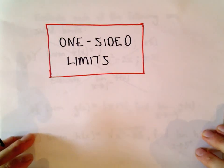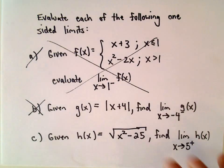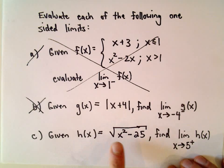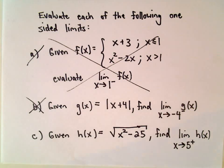Alright, so one more example here of doing a one-sided limit and this one I'm not going to quite graph all the way. So we've got h of x equals the square root of x squared minus 25 and we're doing x is approaching 5 from the right.